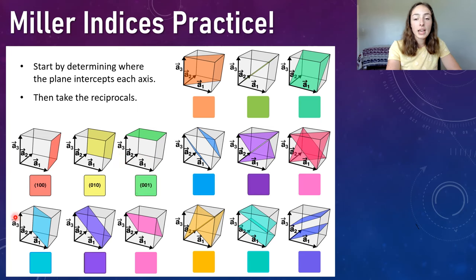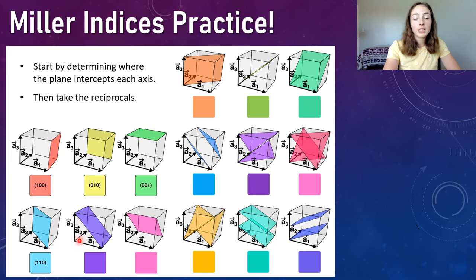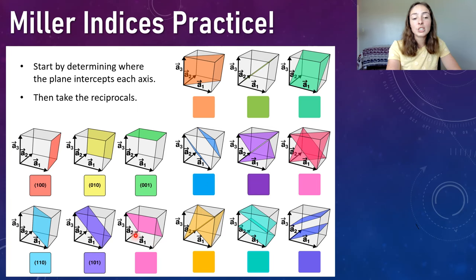Moving to the bottom left blue plane: A1 intercepts at one, A2 at one, but A3 is parallel to the plane — giving intercepts one, one, infinity — so the Miller index is 110. For the purple plane: A1 is one, A2 is parallel, A3 is one — giving one, infinity, one — so the Miller index is 101. Then the pink plane: A1 is parallel, but A2 and A3 both intercept at one — giving infinity, one, one — so the Miller index is 011.